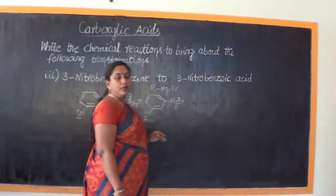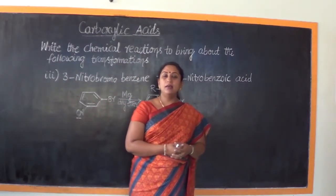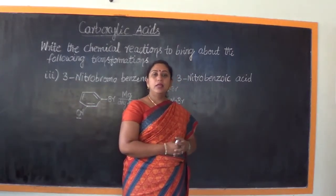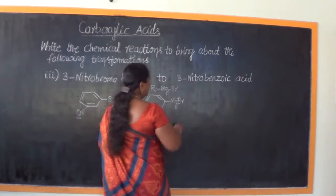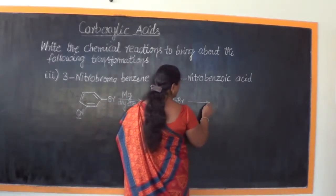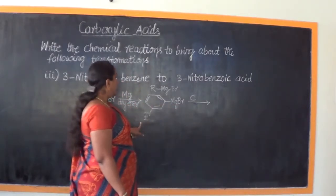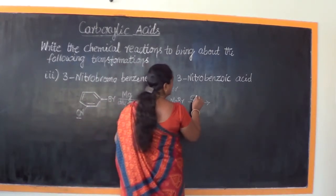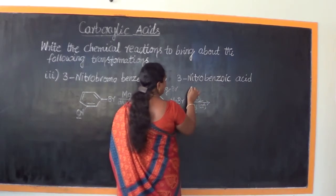With the Grignard reagent, how do we obtain the corresponding carboxylic acid? This we have learnt in the general methods of preparation. It is very simple — to the Grignard reagent, we treat it with dry ice, that is carbon dioxide. Let us continue with that process and treat the nitro-phenylmagnesium bromide compound with dry ice.